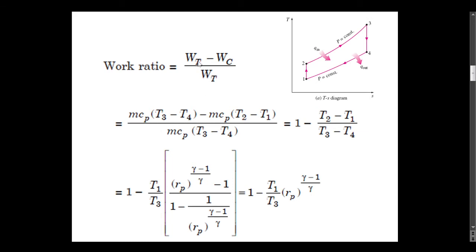By substituting these values of WT, WC and WT, we will get this expression. By cancelling the common terms, and by taking common T1 and T3 and replacing T2 by T1 and T4 by T3 in terms of pressure ratio Rp, we will get this expression. Finally, that is 1 minus (T1 upon T3) × Rp raised to (gamma minus 1) upon gamma. This is the expression for work ratio in terms of minimum temperature, maximum temperature, pressure ratio, and gamma, which is the ratio of specific heats.